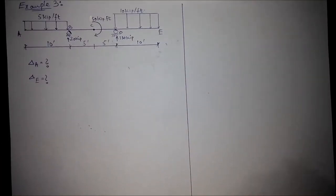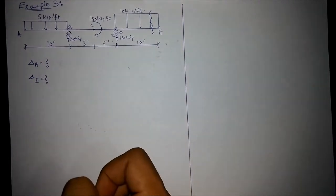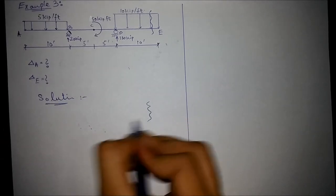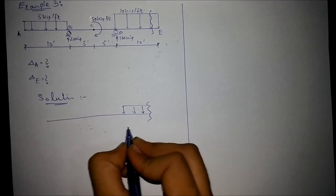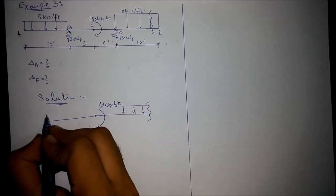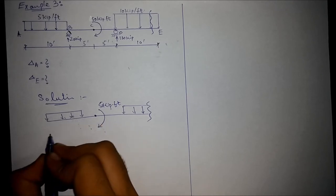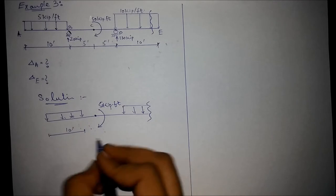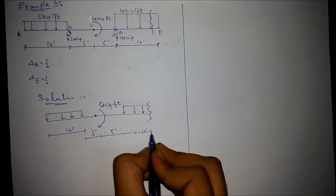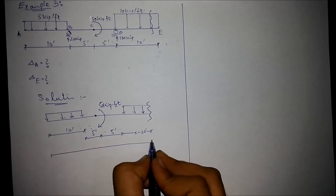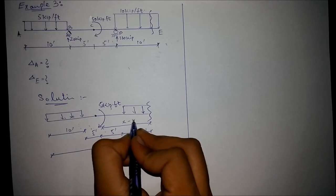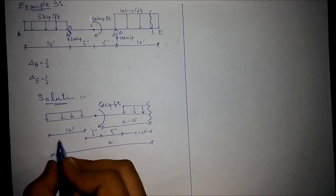We need the moment equation for the given beam. For that, we cut the section at the last point, similarly to the shear force and bending moment approach. The free body diagram of the section shows distances: X minus 20 feet, X minus 15 feet, and X minus 10 feet, where X is the assumed distance from the origin.